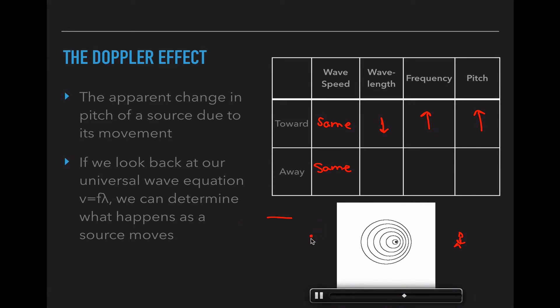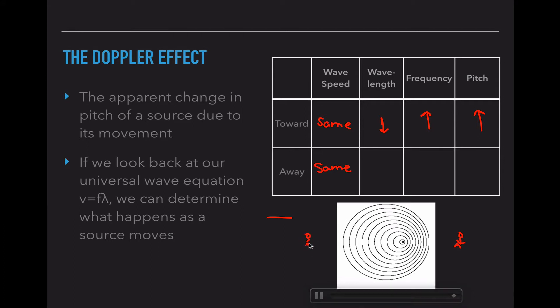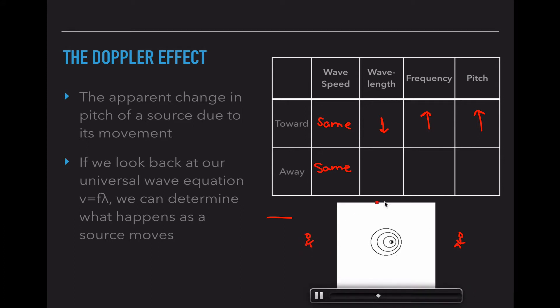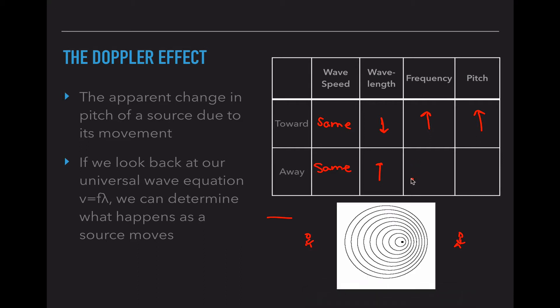So as the object moves away from us, if we are now instead standing over here, our wavelength is increasing, these distances are bigger than when the object was stationary, and since our equation is still v equals f times lambda, if our lambda goes up, our frequency has to go down since the velocity is the same, and that means that the pitch has to go down.